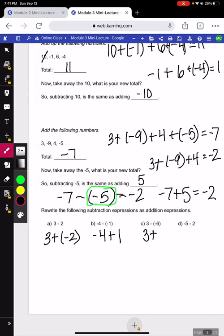3, change to addition, the opposite of negative 6 is positive 6. And our last one, negative 5, change to addition, the opposite of 2 is negative 2.